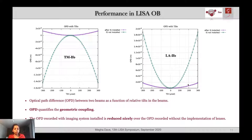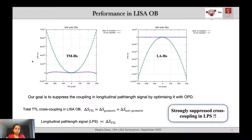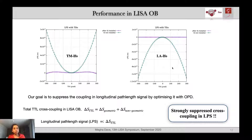Although the OPDs are reduced, they are not yet zero — but that was not the aim. We aimed at reducing the overall cross-coupling in the longitudinal path length signal, which has contributions from both geometric and non-geometric TTL coupling. We optimized the geometric TTL coupling by controlling the geometry of the system and computed the longitudinal path length signal for each interferometer. We observed that using the imaging system, the overall cross-coupling in the LPS is strongly suppressed and brought down close to zero for the test mass and long arm interferometer.